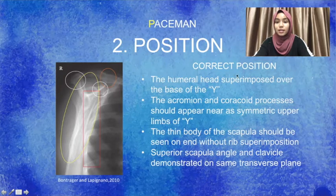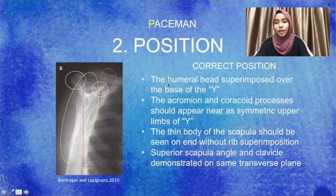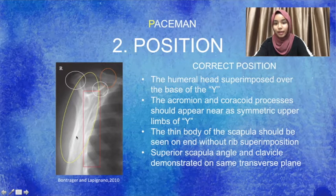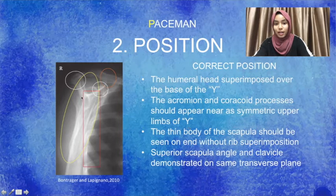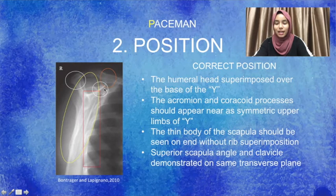Moving next is the position. These are the criteria for the correct position of the scapula Y or PA oblique shoulder. Firstly, the humeral head is superimposed over the base of the Y. The acromion and coracoid processes should appear as near-symmetric upper limbs of the Y — this is the acromion and this is the coracoid, appearing near-symmetric with the limbs of the Y.